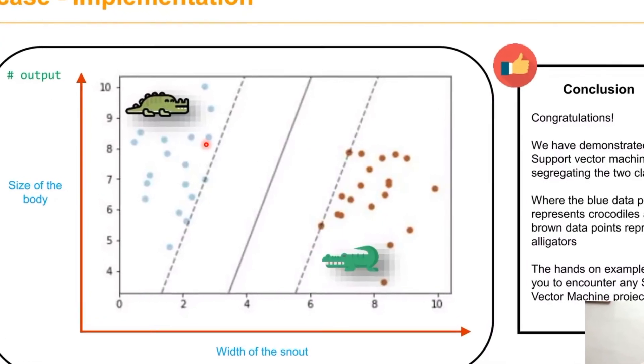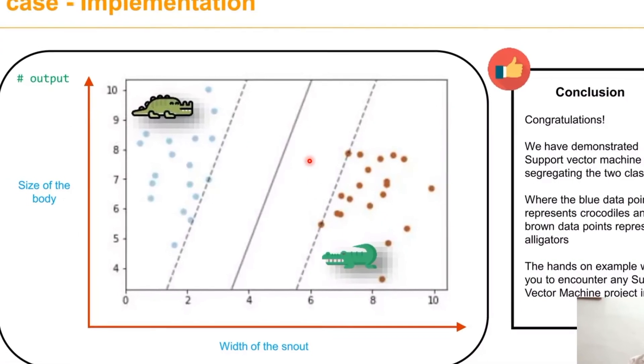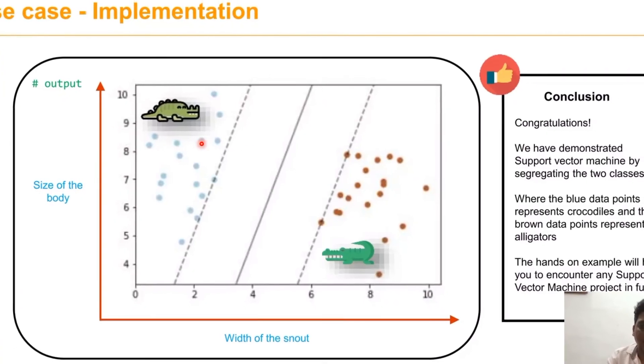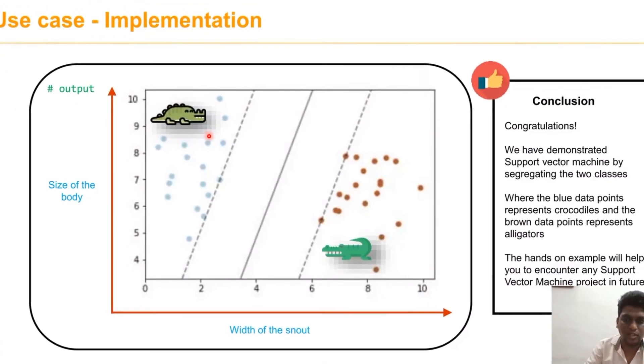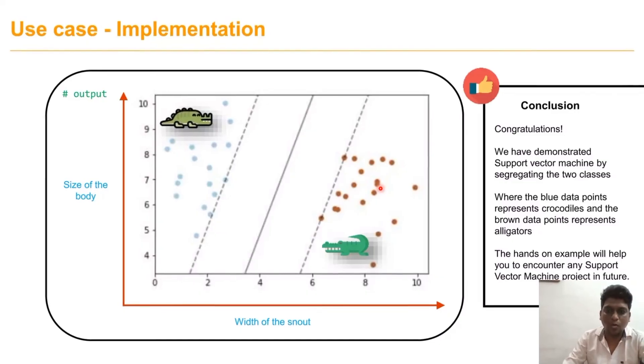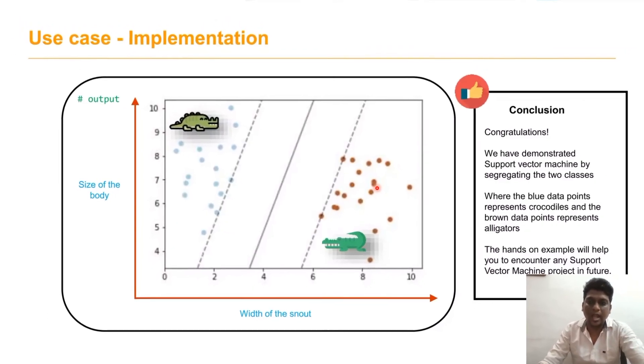Now with the help of support vector machine, we segregate the two classes. The blue data points refer to the crocodiles and the brown data points refer to the alligators.